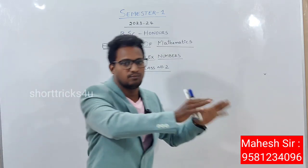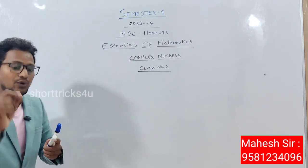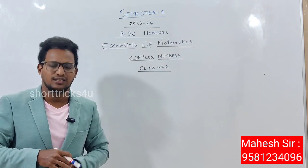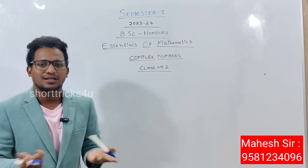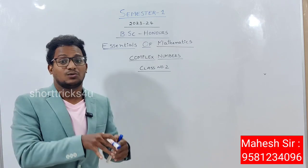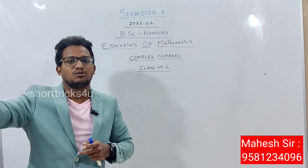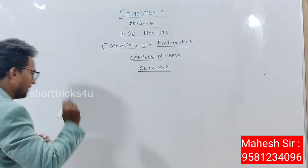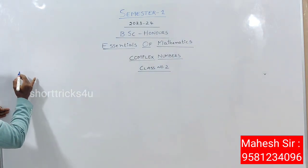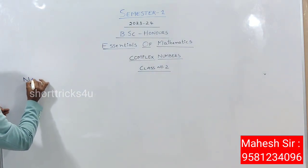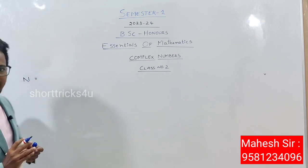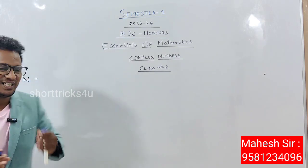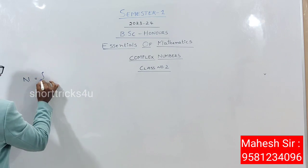Before going directly into complex numbers, you need to know about what numbers are. That is a general question. Generally, a number starts from zero. Counting numbers go: 1, 2, 3, 4 — these are called counting numbers. We know that we have most number types in the number system. First: what are natural numbers? Natural numbers are counting numbers: 1, 2, 3, 4 and so on.